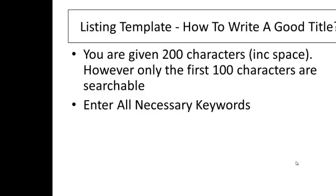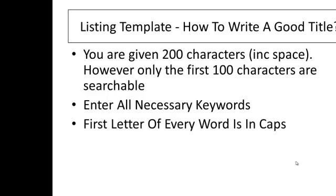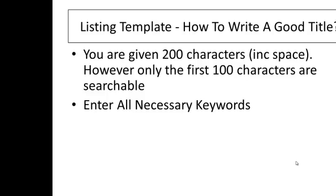Enter all the necessary keywords in the headline and take note of any character variations. What I mean by variations is that for some products there are a few ways to describe them — for example, a thumb drive would also be called a flash drive.